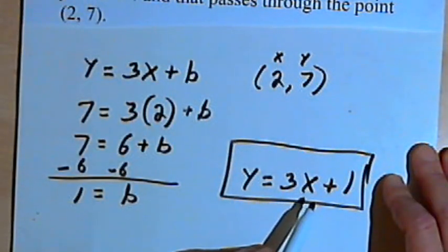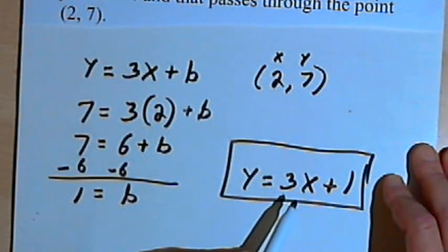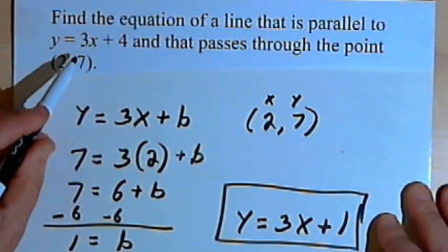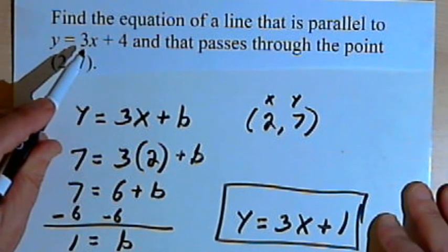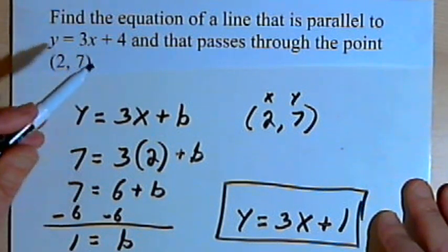So y equals 3x plus 1 has the same slope as the original equation I've been given, y equals 3x plus 4, so it's parallel to it. I also know that it passes through the point (2, 7).